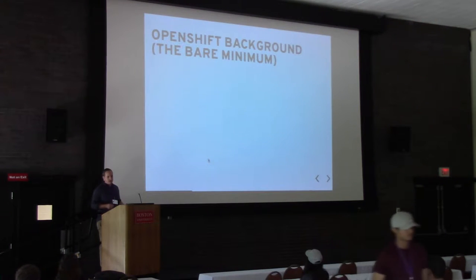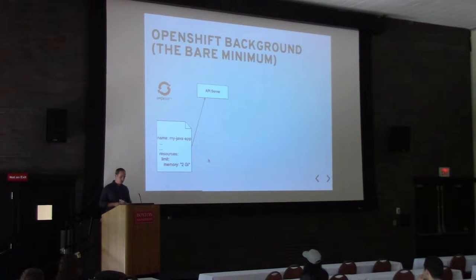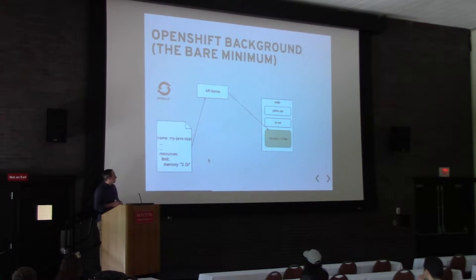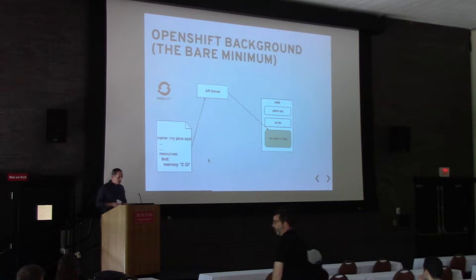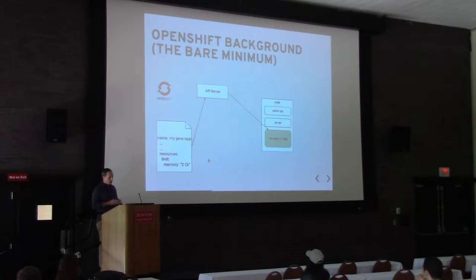I'm going to introduce the problem by giving some background into OpenShift and the JVM. OpenShift allows developers to declare an intended state for their application. In this example, a Java app declares it should get two gigabytes of memory, and that configuration is passed to the API server where the containerized application will be deployed in a pod. On the right-hand side, we have a server node running a Python app, a Go application, and some free space. The Kubernetes API server schedules the Java application wherever it can find free space.